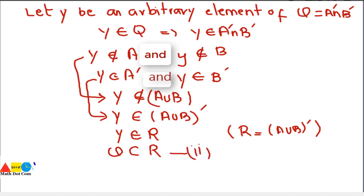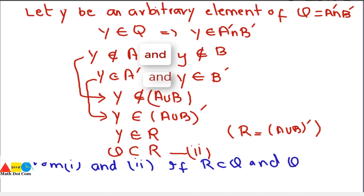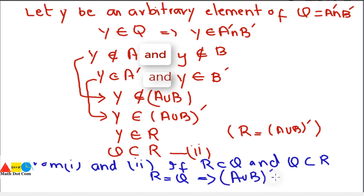This is equation 2. From equations 1 and 2: R is a subset of Q and Q is a subset of R, so R = Q. Replacing R with (A ∪ B)' and Q with A' ∩ B', we have proved the first form of De Morgan's Law.